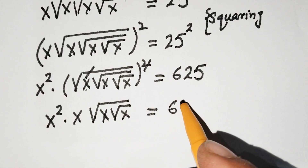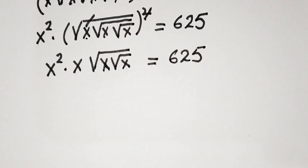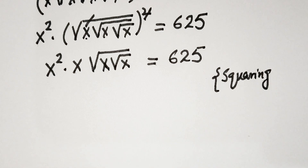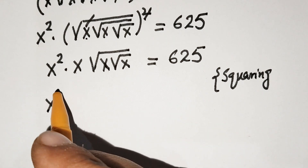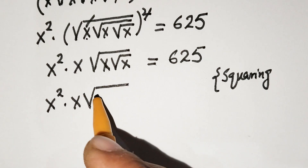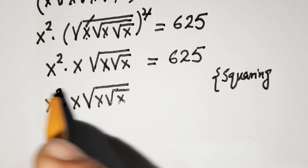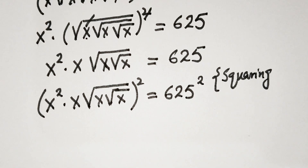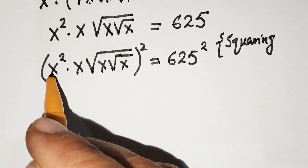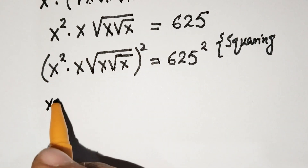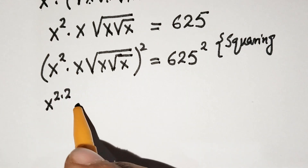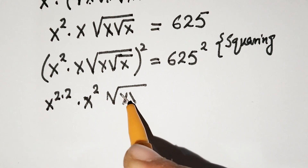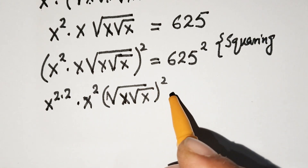This expression equals 625. Squaring again at both sides, we get x squared times x times square root of x times square root of x, all squared, equal to 625 squared.